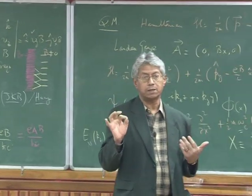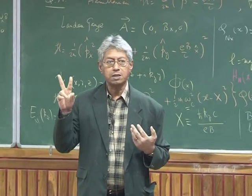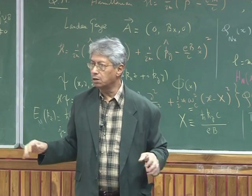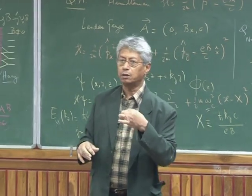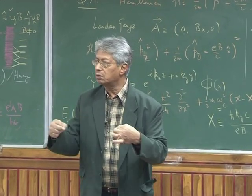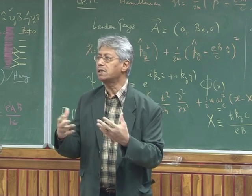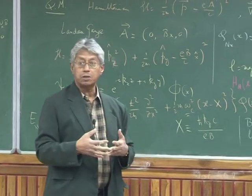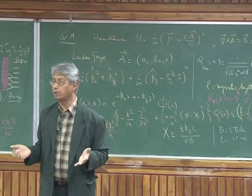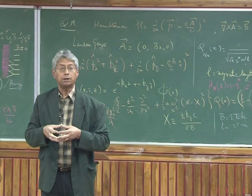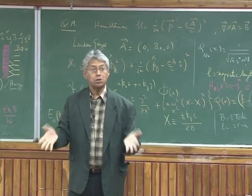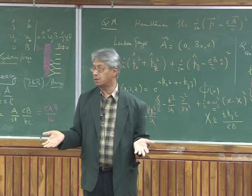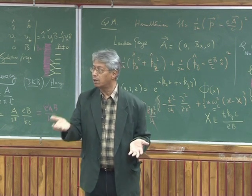Where does quantum mechanics appear? Quantum mechanics appears in two distinct forms. One is that even if you don't worry about statistics, just the very fact that I have wave particle duality, and therefore I cannot localize any particle. X and P do not commute. The commutator is IH bar. And because they don't commute, I have delta X, delta P as this uncertainty principle. So therefore, I have quantization.